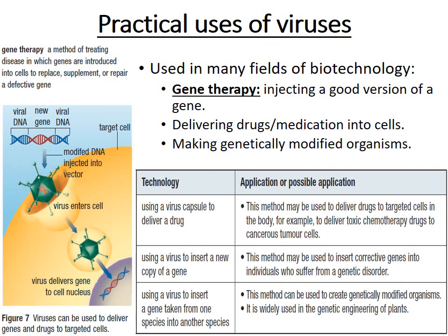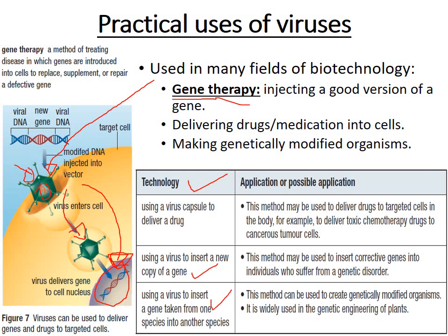Viruses also have practical and useful applications. One example is gene therapy, where a virus acts as a vector or vehicle to deliver a good copy of a gene into a cell that carries a defective copy. Viruses can also be used to insert a gene taken from another species, useful for creating GMOs. Additionally, a virus capsid can be used to deliver a drug to a specific part of the body, such as a tumor cell, without harming other cells.